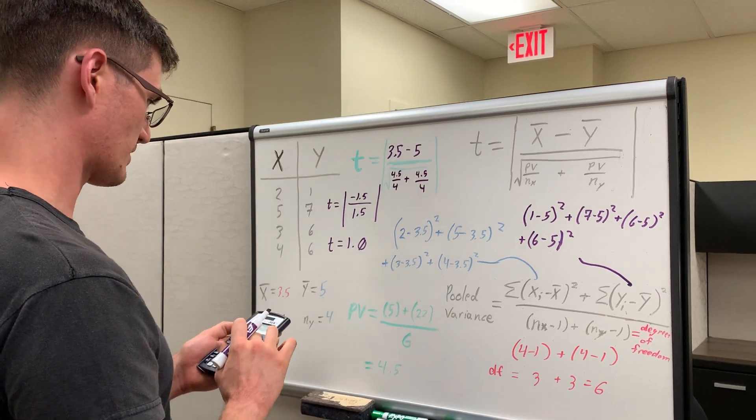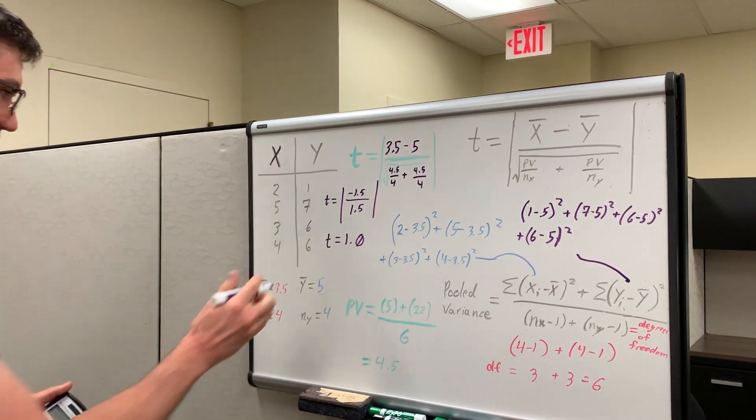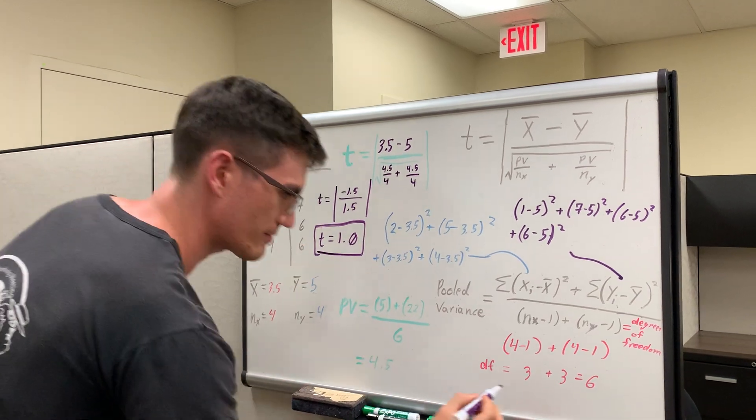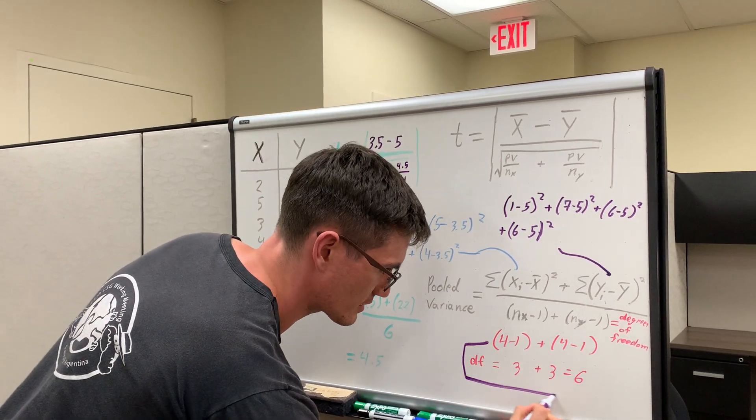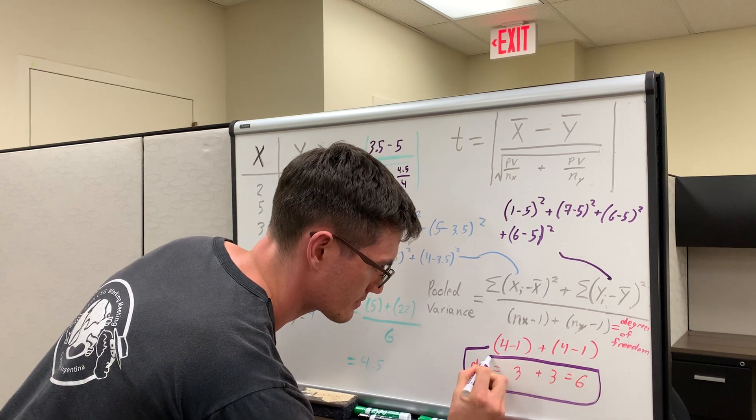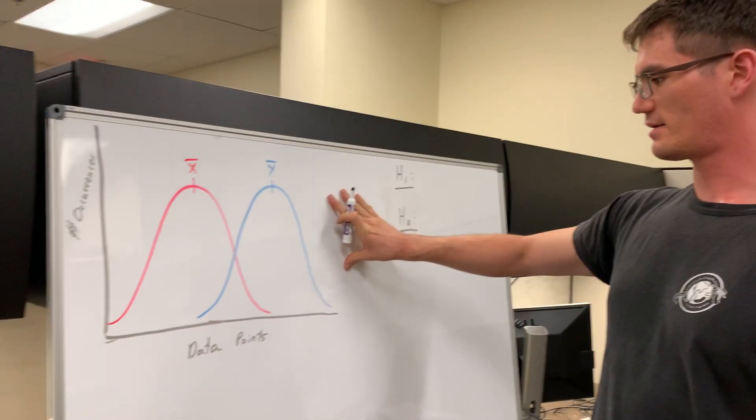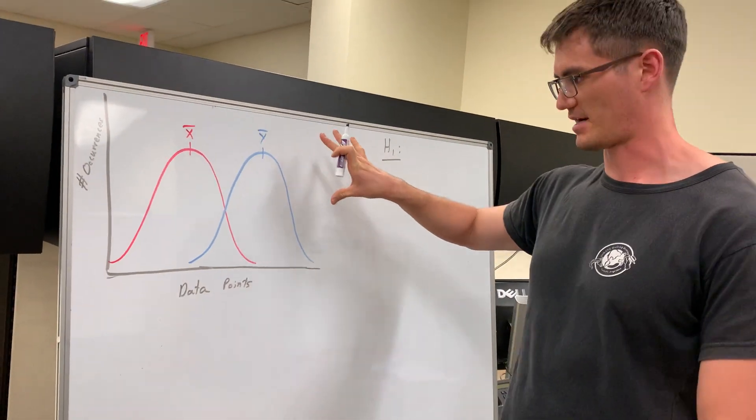So that's our t value. So now let's take a step back. We'll come back to this t statistic and we'll definitely come back to this degrees of freedom. And then once you join me over here, we're going to actually look at the theory, more of the statistical theory behind this mindless math.